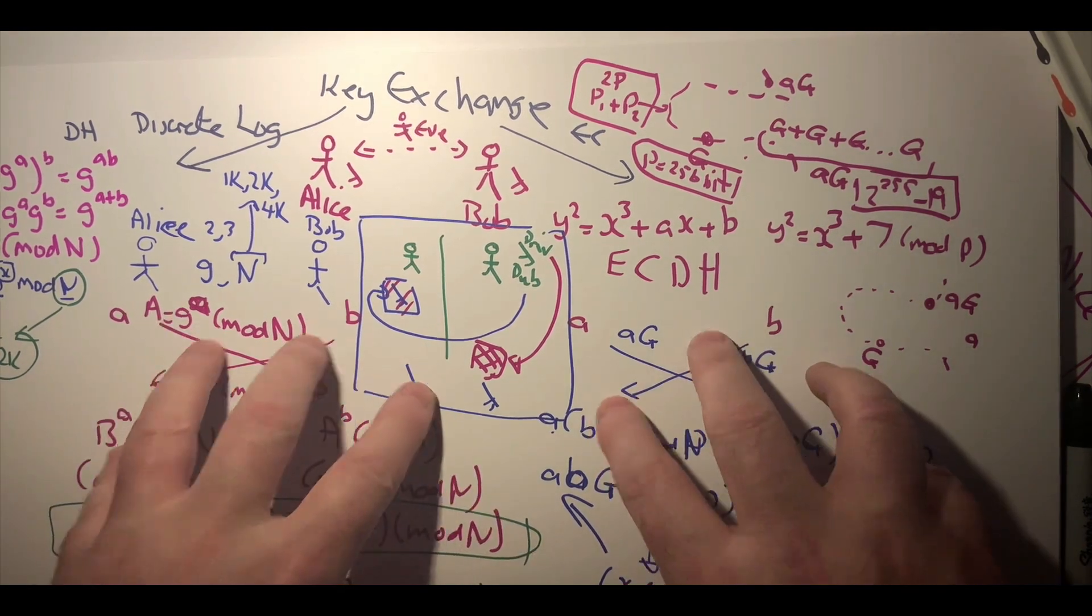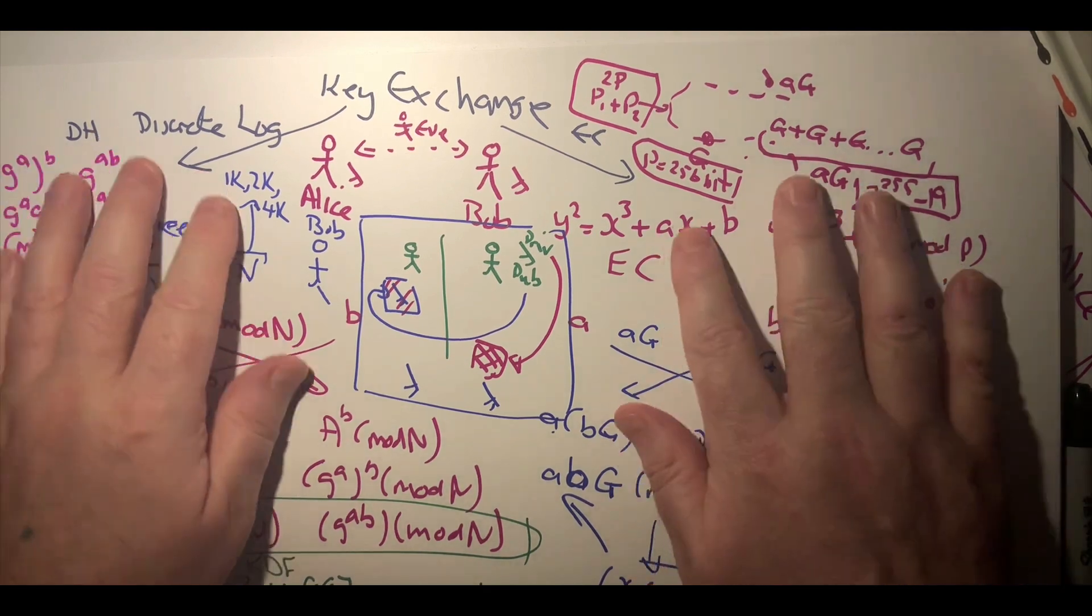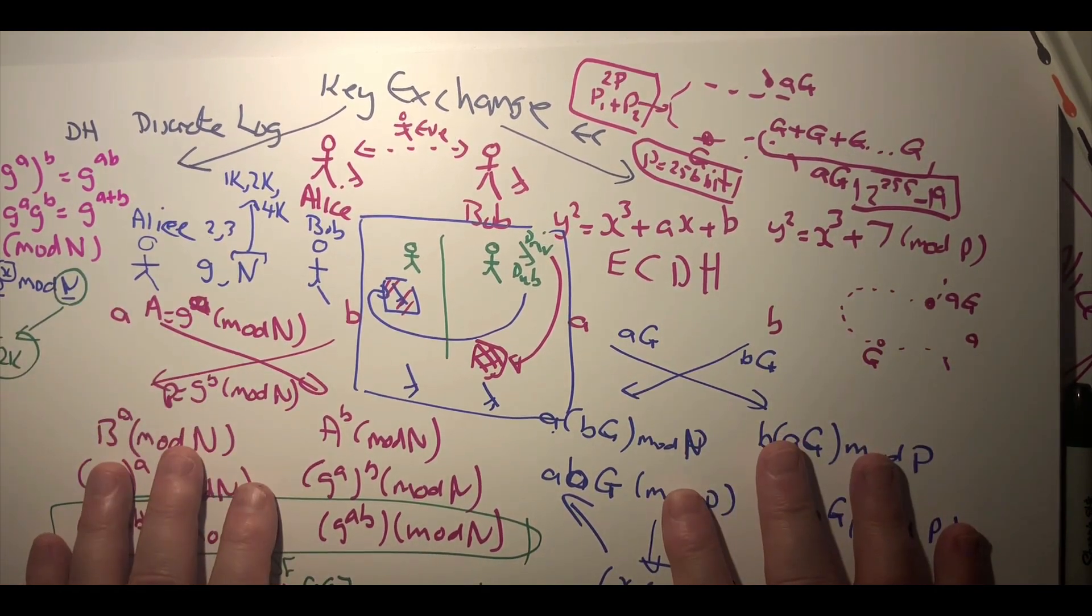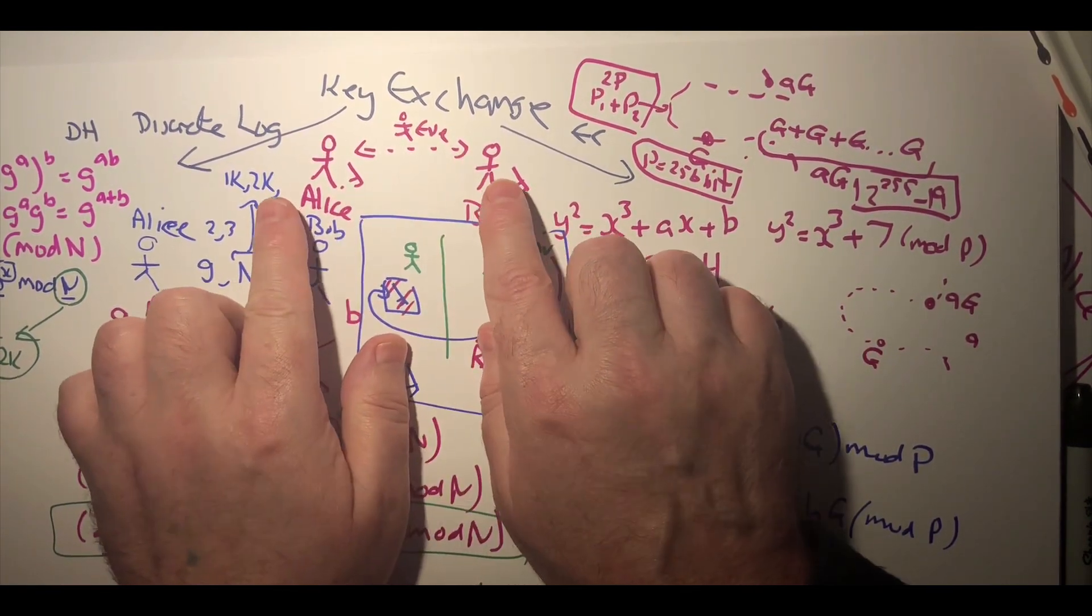Okay, the methods that I've outlined here could be open. These two methods could be open to an Eve in the middle.